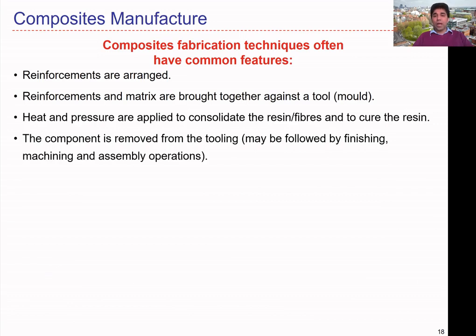We also have to apply heat and pressure — sometimes both simultaneously — to consolidate the resin and fibers and to cure the resin. Application of heat and pressure is quite common in most composite manufacturing processes. For example, we can use an autoclave for pre-impregnated structures, or use compression molding or injection molding with high pressure and high temperature.